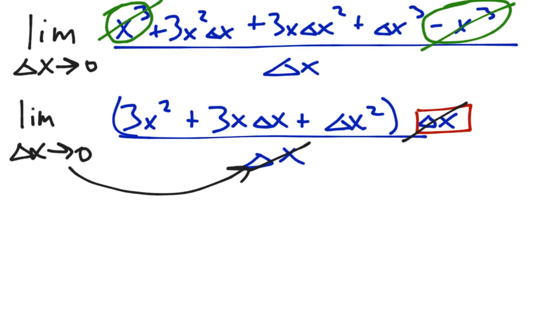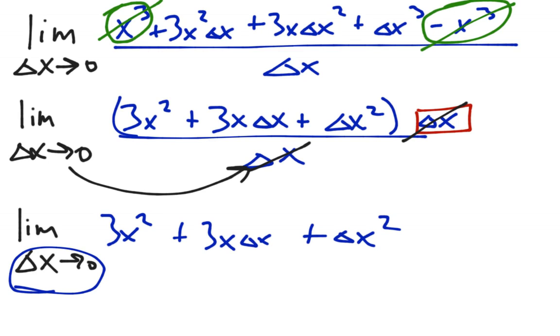And now we can just plug in zero for the delta x's. And so the next step is limit delta x approaches zero. And we just rewrite the same thing, 3x squared plus 3x delta x plus delta x squared. But wait, delta x is going to zero. So that and that are both going to zero. Zero, zero.